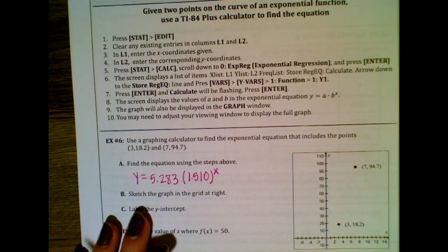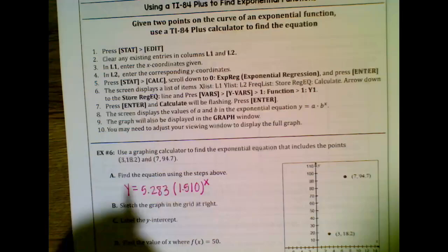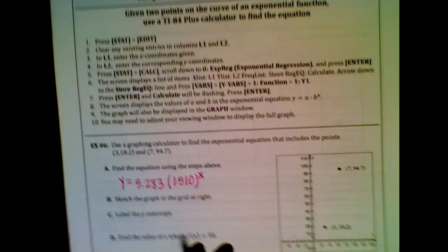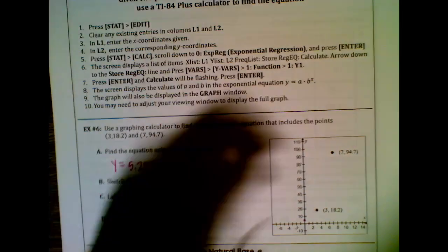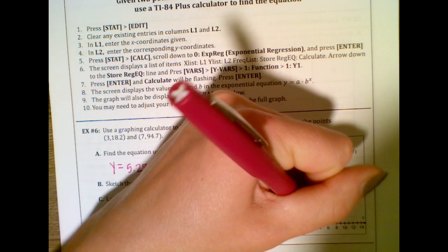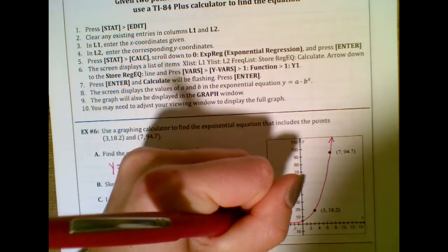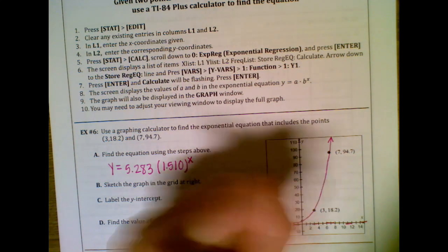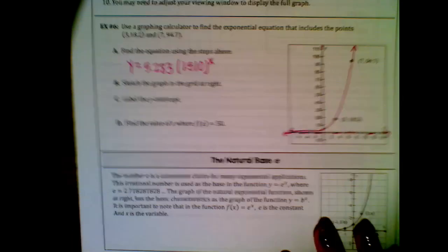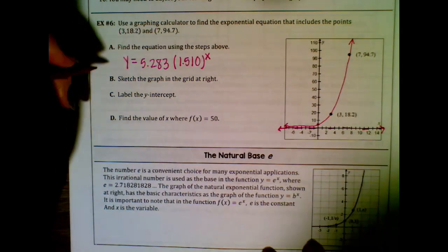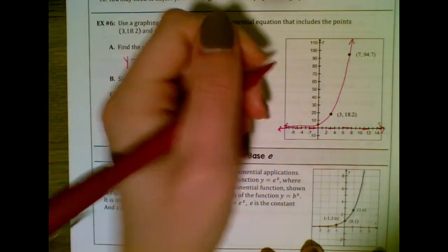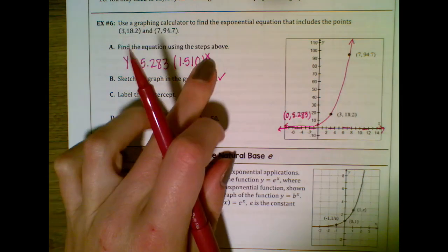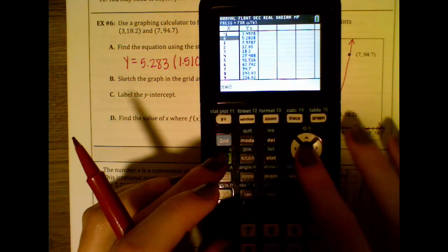Part b says to sketch the graph on the grid at the right. We've got the two points and we know the function goes up like that. The y-intercept is at 5.283, so I'll mark that. I'll sketch the graph, and note there is a horizontal asymptote at y = 0. The y-intercept is (0, 5.283).